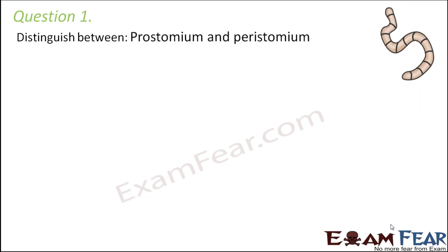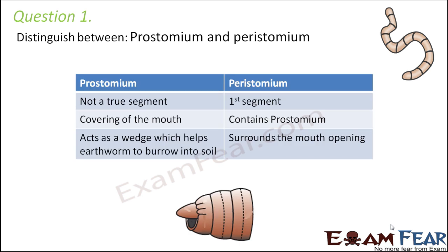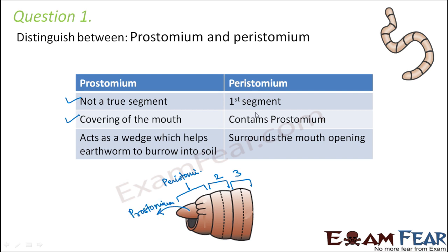Question one: distinguish between prostomium and peristomium. These two terms look very similar but are not the same. Peristomium is the first segment of the earthworm, whereas prostomium is not a segment at all — it is just the covering of the mouth present in the first segment. Peristomium contains prostomium. Prostomium acts as a wedge which helps the earthworm burrow into soil, while peristomium surrounds the mouth opening.